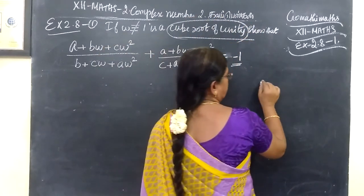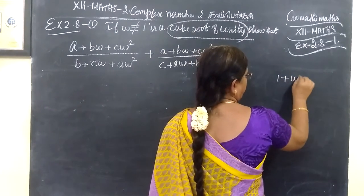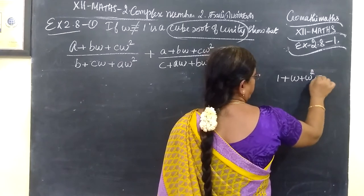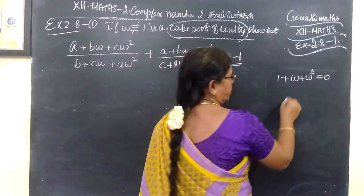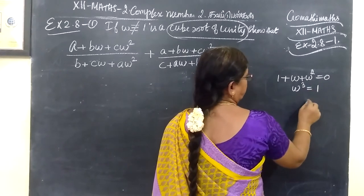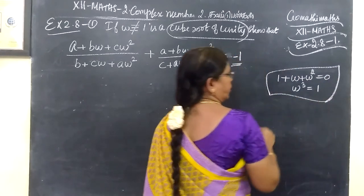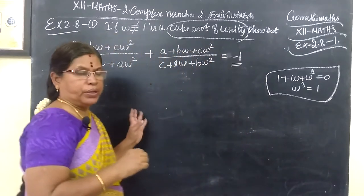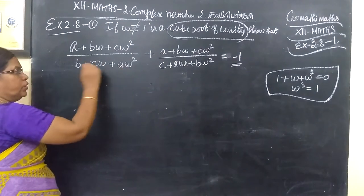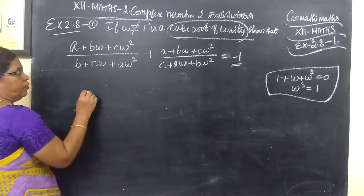First we write the results. We know: 1 plus ω plus ω² equals 0 — this is one result. And ω³ equals 1 — this is the second result. We will use these results to do this sum.